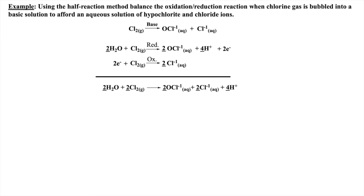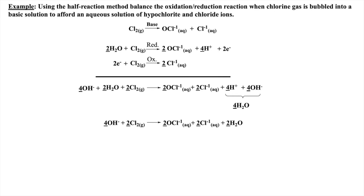Again, up to this point, all the steps have been the same as if the reaction were in acid. However, the reaction is in base, so we now need to add hydroxyl groups to neutralize the protons present. In this example, there are four protons on the product side. Thus, I must add four hydroxyls to the product side. But remember, if I add four to the product side, I must add four to the reactant side. At this point, I have formed four water molecules on the product side, which require simplification with the two water molecules on the reactant side. Finally, a check for numbers of atoms and charges is completed on our balanced equation.